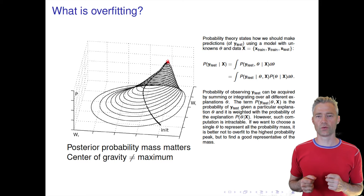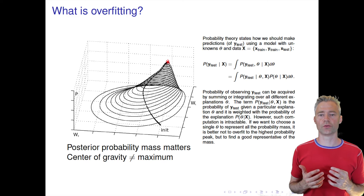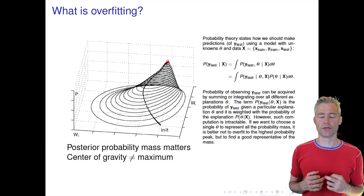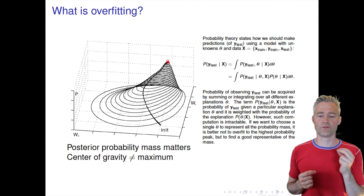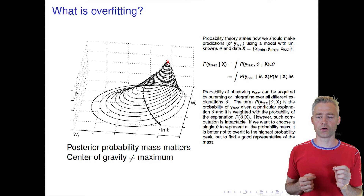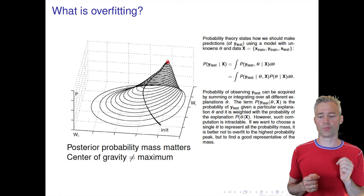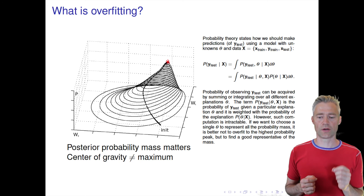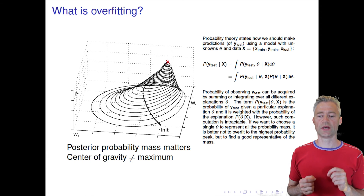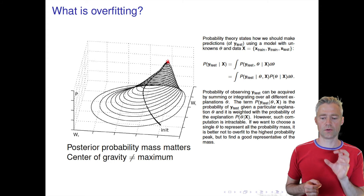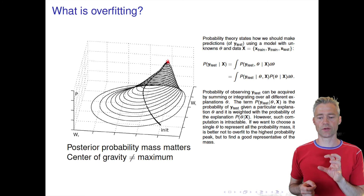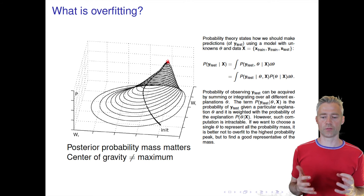Why do we get overfitting? We can appeal to the Bayesian paradigm. In the Bayesian paradigm, we would say that we are not looking at one single value of the parameters. When we make a prediction on a new point Y test, we want to average over our posterior beliefs on the parameters theta. So we want to integrate our likelihood function P of Y given X and the parameters over our posterior distribution of the parameters.